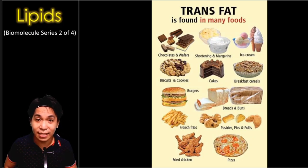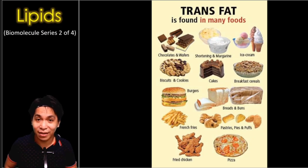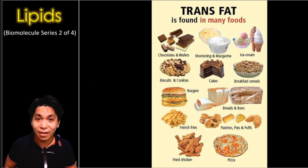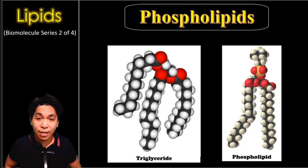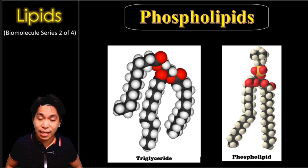Food scientists found out that chicken nuggets have the highest amount of trans fat, followed by fries, burgers, and other foods that we can buy in fast food chains.